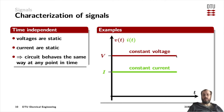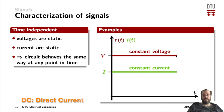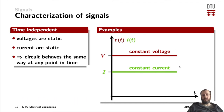That also means the circuit behaves the same way at any given point in time. In terms of electrical circuits, we often call that DC, which stands for direct current, no matter if we are talking about actually a voltage or a current.